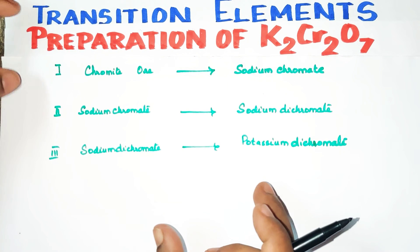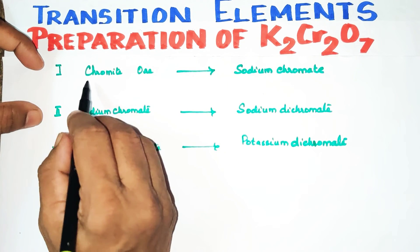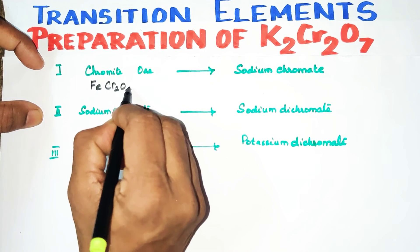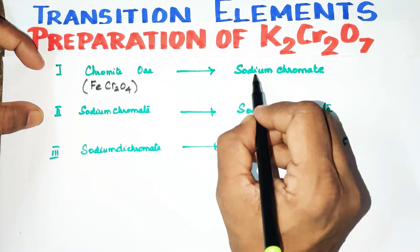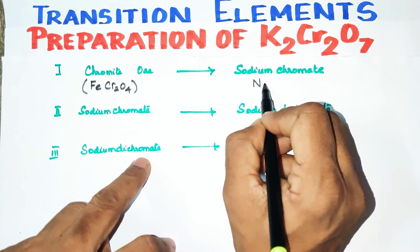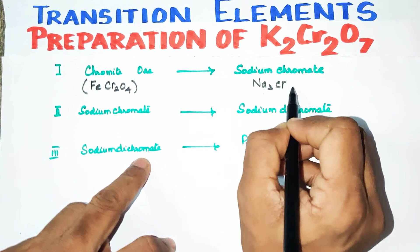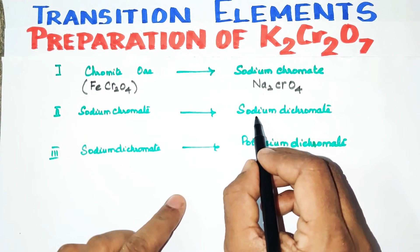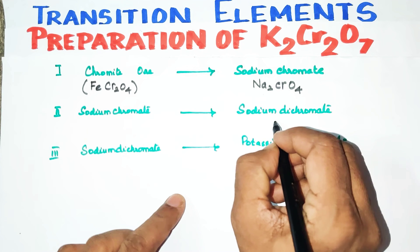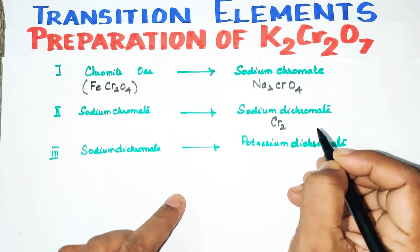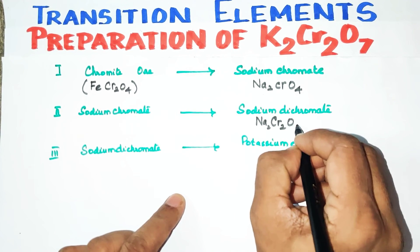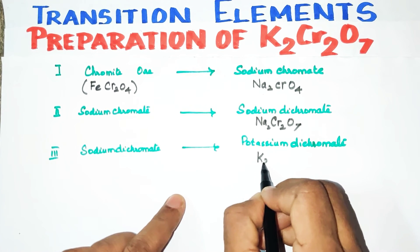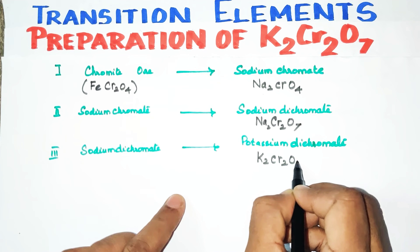Let's review the key formulas. Chromite ore formula is FeCr2O4. Sodium chromate formula is Na2CrO4. Sodium dichromate formula — dichromate contains Cr2 — is Na2Cr2O7. And potassium dichromate formula is K2Cr2O7.